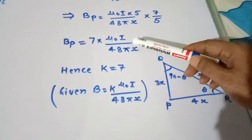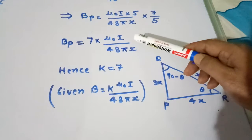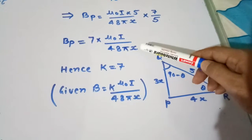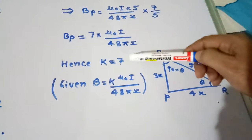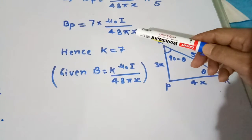In our question, BP is given as K times μ₀I divided by 48πX. So K will be 7. This is our answer. Thank you.